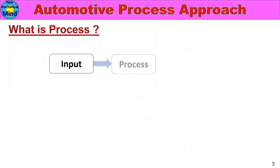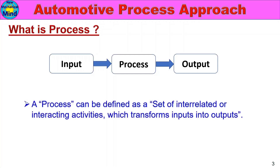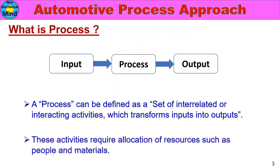First, what is Process? Process can be defined as a set of interrelated or interacting activities which transforms inputs into outputs. These activities require allocation of resources such as people and materials. This is the process definition.